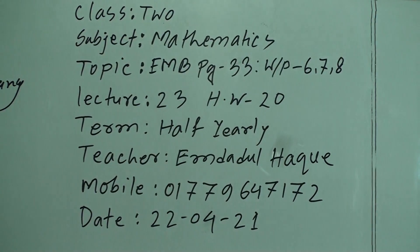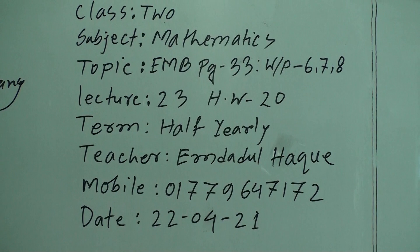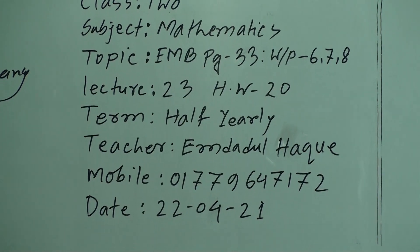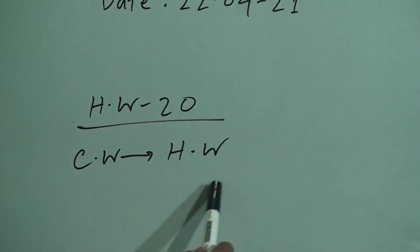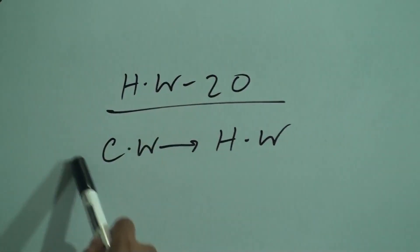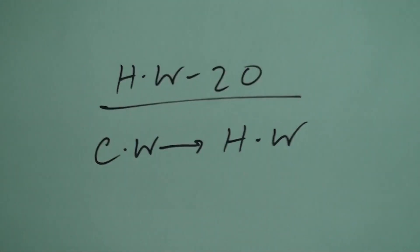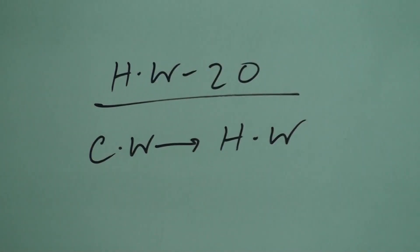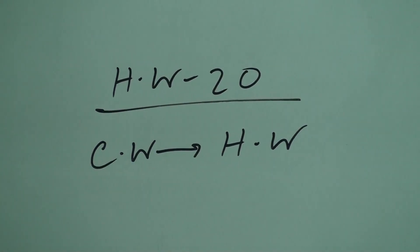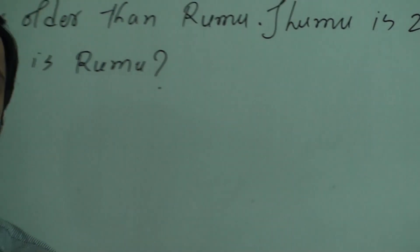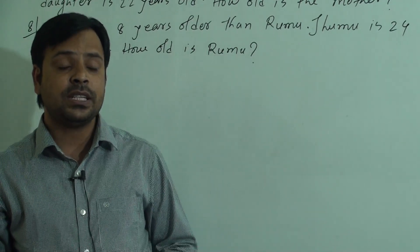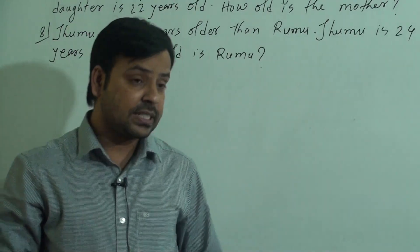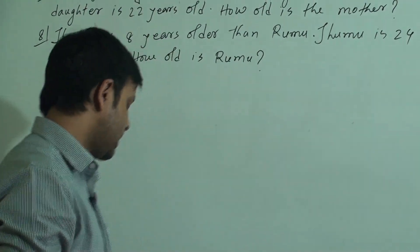Dear students, today your homework 20 topic is CW to HW. It means that these 3 questions I will solve in today's class and these 3 questions will be your homework. Now let us see the questions.